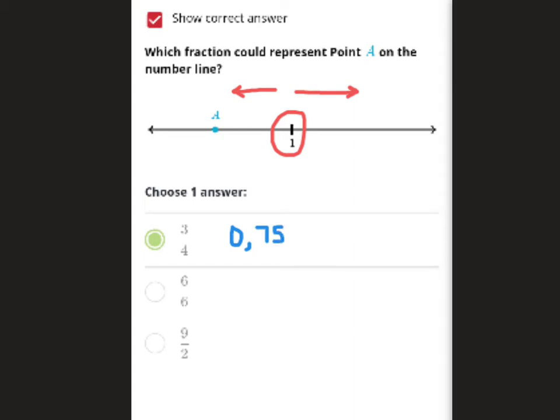We have 6 over 6, which is 1, and 9 over 2, which is 4.5.